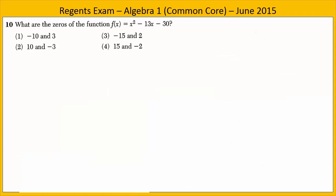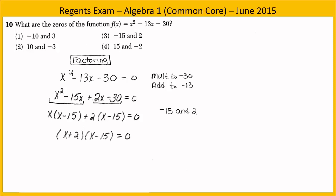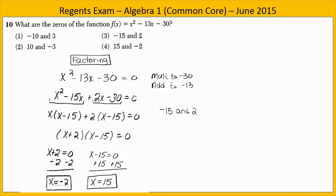In Exercise 10, we want to know what the zeros of the given function are. There are several ways to find the zeros. The first option is to factor — find numbers that multiply to negative 30 and add to negative 13, which are negative 15 and 2. Factor, then set each factor equal to 0 and solve. We get x equals negative 2 and x equals 15. Choice 4 is the answer.